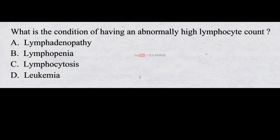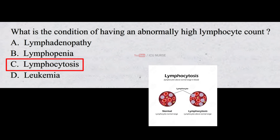What is the condition of having an abnormally high lymphocyte count? A. Lymphadenopathy B. Lymphopenia C. Lymphocytosis D. Leukopenia. The correct answer is C. Lymphocytosis. Lymphocytosis is the condition of having an abnormally high lymphocyte count.